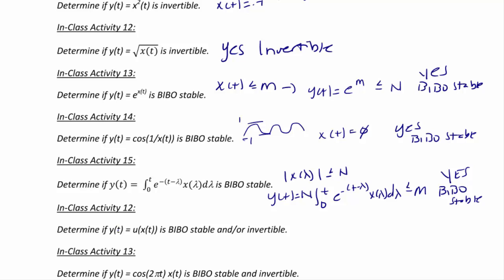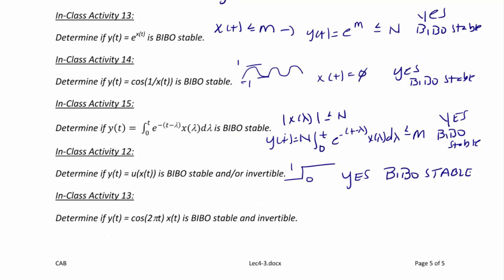For y(t) = u(x(t)), the unit step function: the step function always outputs a value between 0 and 1, so no matter what input is applied, the output is bounded — it is BIBO stable. However, if the output is 1, you don't know what the input was, so y(t) = u(x(t)) is not invertible.